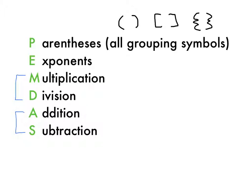Then we have E for exponents, which you don't need to worry too much about in 5th grade. Then we have multiplication or division, whichever comes first from left to right — you always want to remember left to right. And then lastly, addition or subtraction, whichever comes first from left to right. And those are the order of operations.